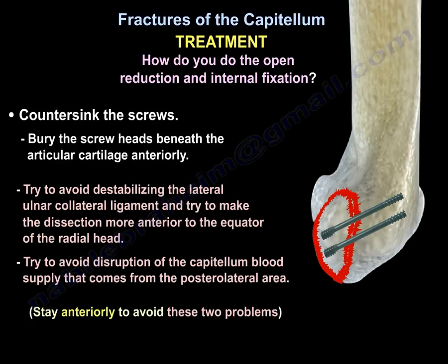Counter-sink the screws and bury the screw heads beneath the articular cartilage anteriorly. Avoid destabilizing the lateral ulnar collateral ligament by keeping the dissection anterior to the equator of the radial head. Also avoid disrupting the capitulum's blood supply, which comes from the posterolateral area — staying anteriorly will prevent both of these problems.